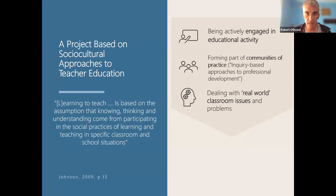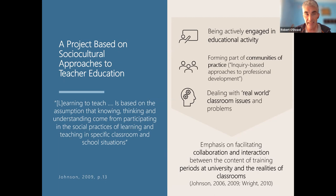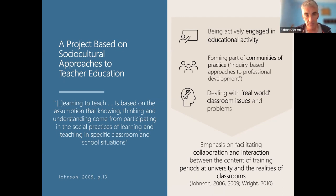This is what the Valiant project is based on — an emphasis on facilitating collaboration and interaction between the theory we study in our classes at university and the realities of the classroom. Looking at the interactions between the theory and the practice, and helping students get access to these realities whatever they happen to be — that's basically what the project is based on.